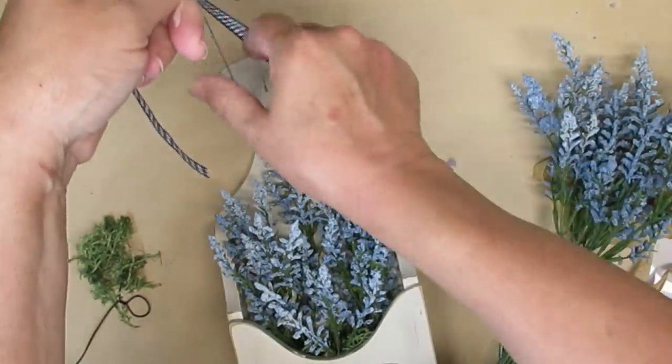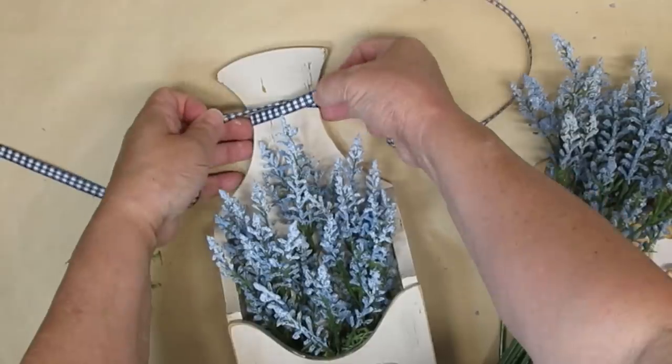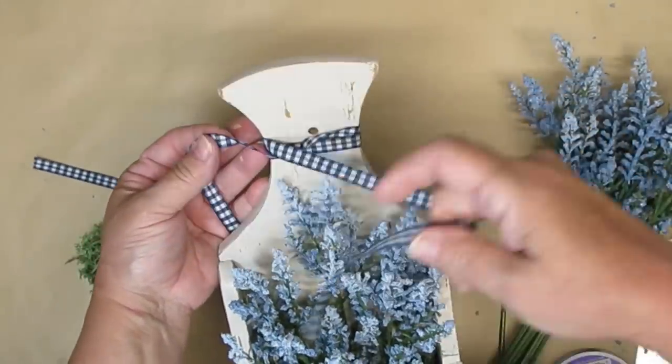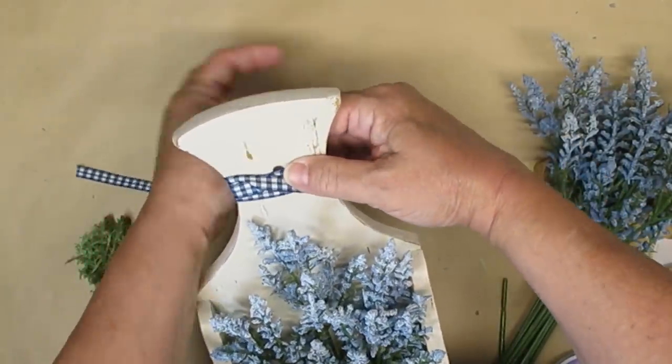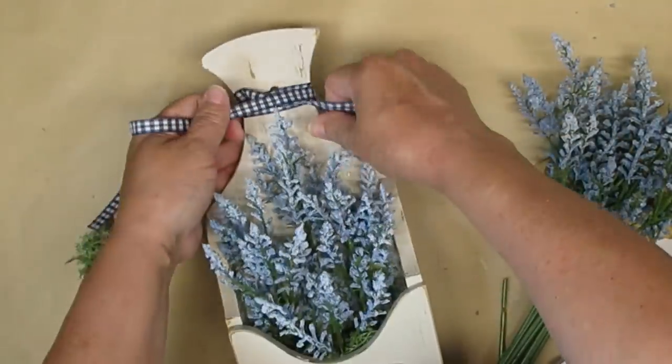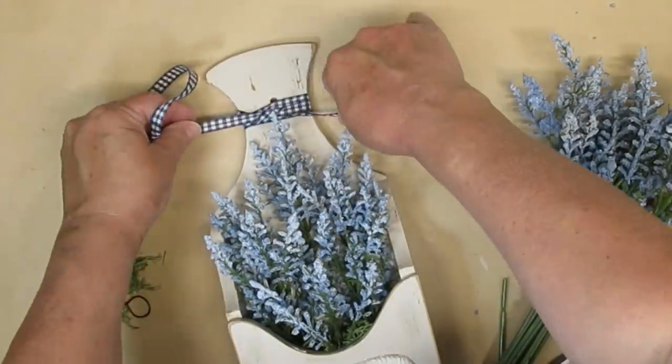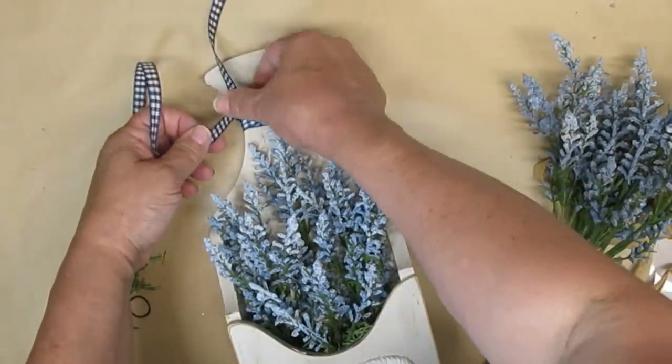I found some dark blue and white gingham ribbon in my stash. I'm just going to wrap it around a couple of times and then tie a simple shoestring bow. This is beautiful. I know I've said that before too, but I really really like how this one turned out. You'll have to let me know what you think.